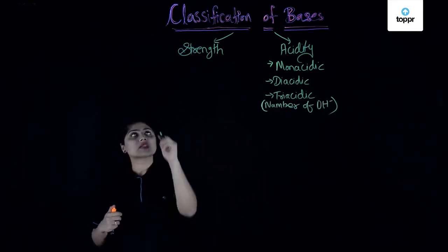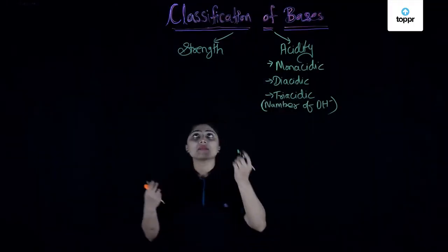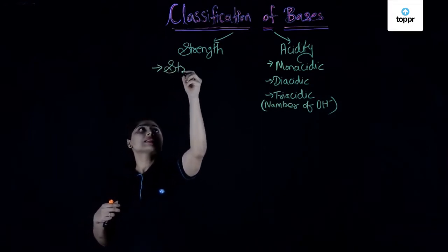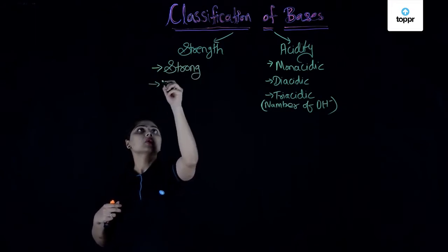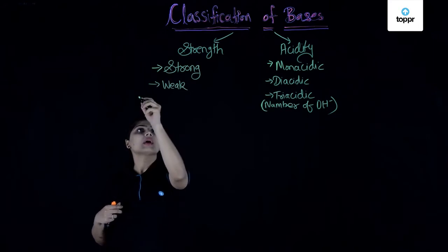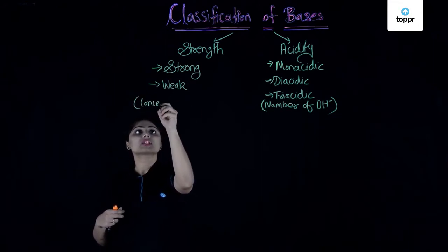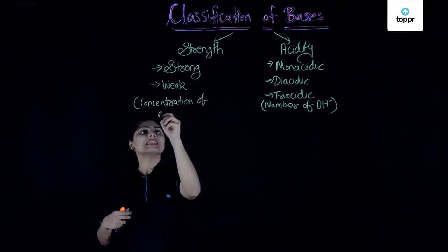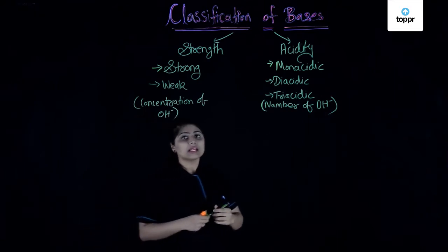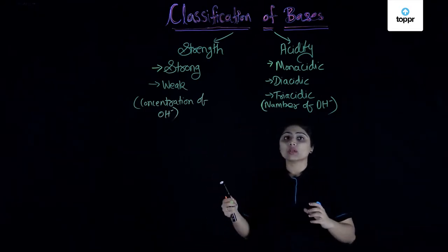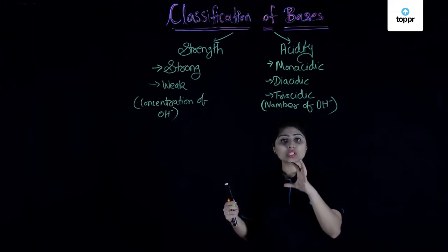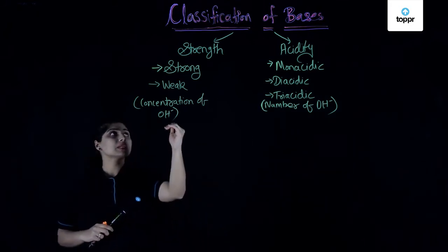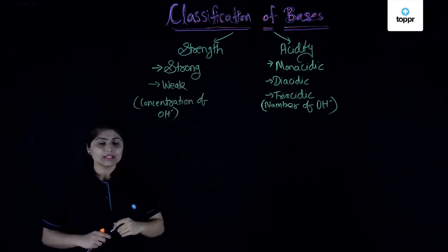When we talk about the strength of bases, we classify them as strong bases and weak bases. Strong and weak depends upon the concentration of OH- in a solution — that means how many OH- ions a base can produce when dissolved in solution. According to that concentration of OH- ions, we divide bases into strong and weak.